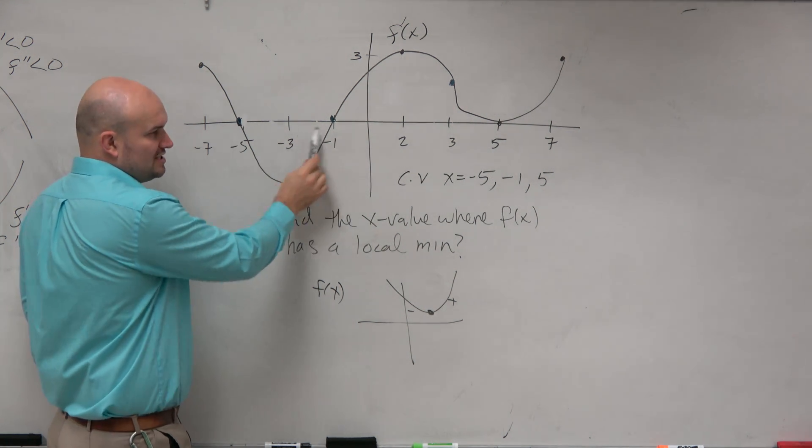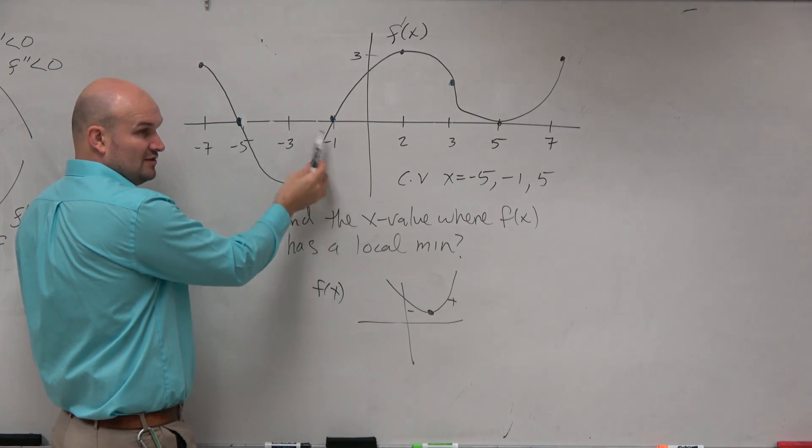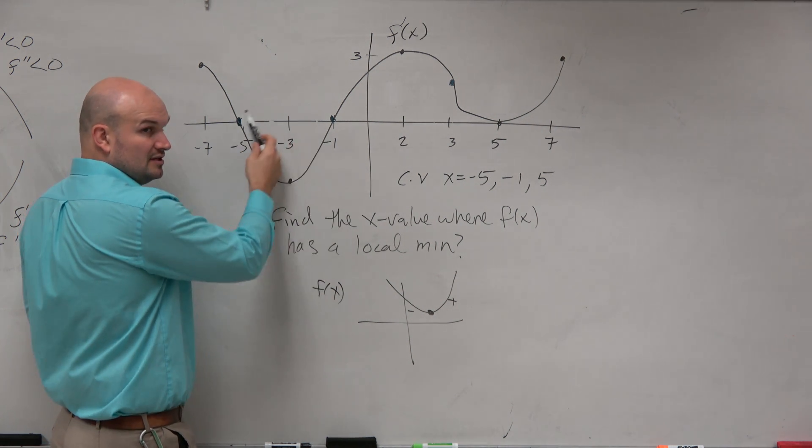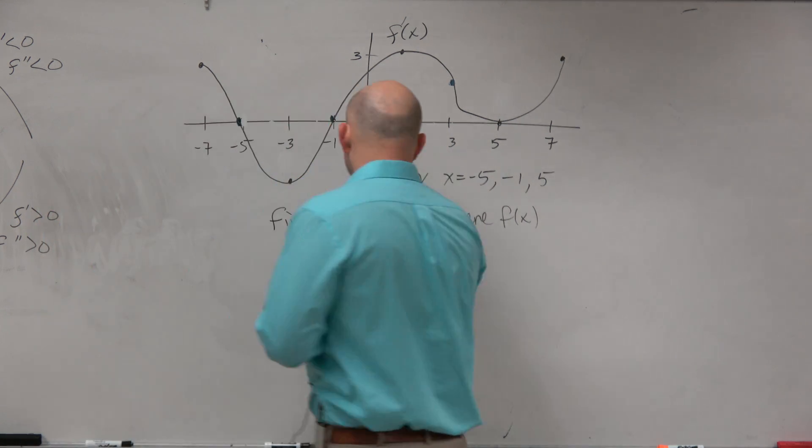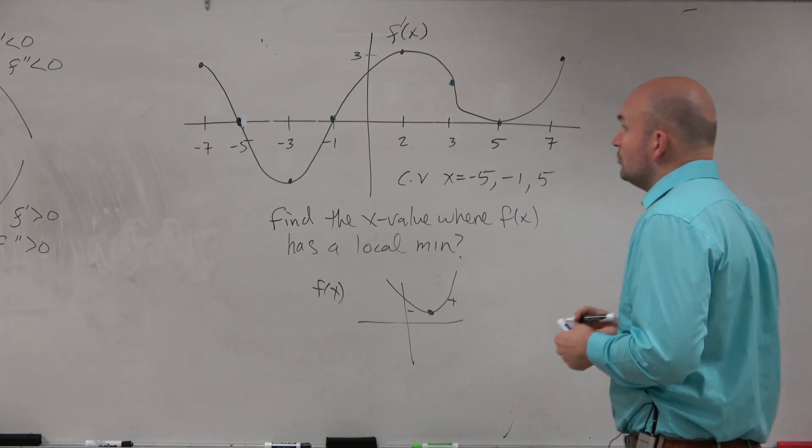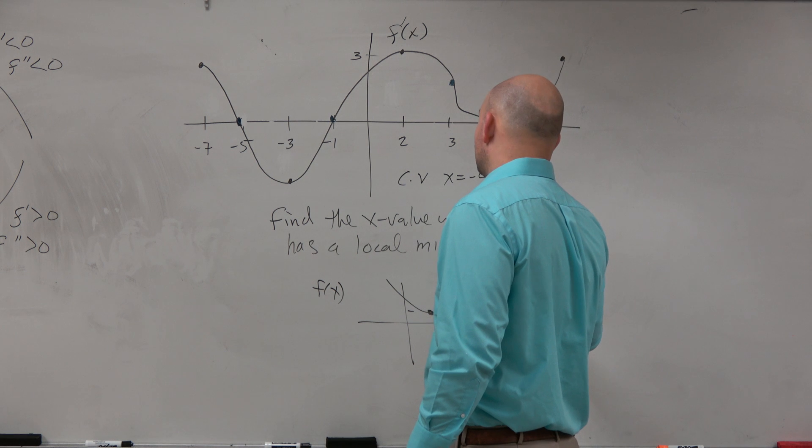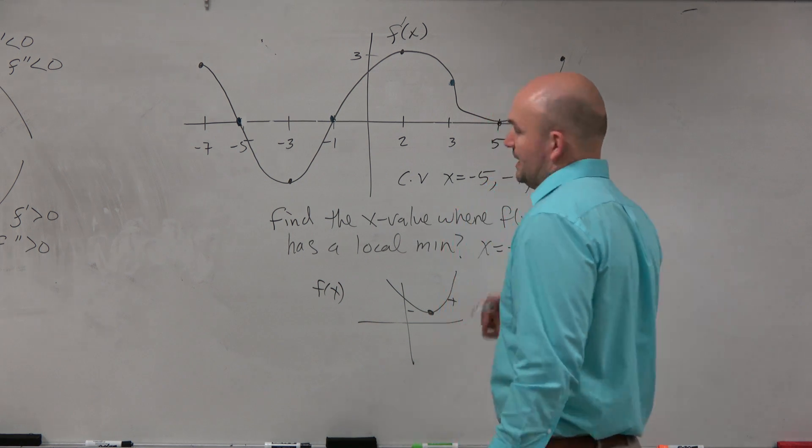But at negative 1, we're changing our slope from negative to the left of negative 1. All these values are negative. And then here, all the slopes are now positive. So the only value, the x value where f of x has a local minimum, is x equals negative 1.